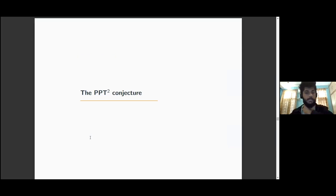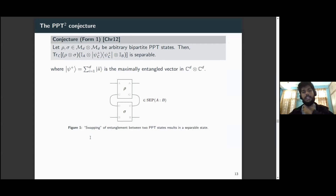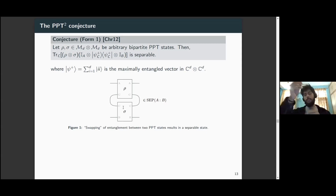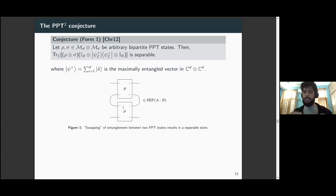Now let me introduce the PPT squared conjecture. The conjecture says that given two arbitrary bipartite PPT states, a certain composed expression corresponds to a separable state. To think about this: Alice, Bob, and Charlie share states where Charlie shares a PPT state ρ with Alice and another PPT state σ with Bob. If we trace out Charlie's degrees of freedom, the resulting state on the Alice-Bob subsystem should be separable.